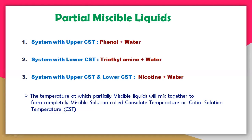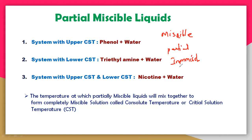Today we are going to start with partial miscible liquids. Till now we have completed miscible liquids, ideal solutions, and non-ideal solutions. Now we will see partial miscible liquids. Generally, liquids are classified into three types: miscible liquids, partial miscible liquids, and immiscible liquids.